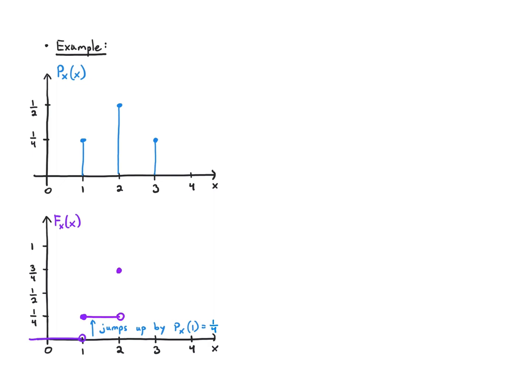The probability of being less than one-half is really just the probability of being equal to one, because that's the only interesting thing going on. Until I get to two — now the probability of being less than or equal to two equals the probability of being equal to two plus the probability of being equal to one. So I jump up by the probability of two, which is one-half, going all the way to three-fourths. Finally, I slide to three, and when I reach three I jump up to one, because the probability of being less than or equal to three covers everything. It just slides to the right, staying at one forever.